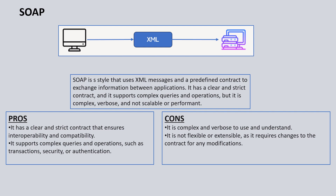The second pattern is SOAP. SOAP is known for using XML messages. The main attribute of SOAP is that it uses a very strict or predefined schema or contract with applications. Because of the strict schema, it can sometimes become very complex and verbose. The main takeaway from SOAP is that it uses an XML contract and defines a very clear-cut contract that ensures interoperability and compatibility between client and server. It also supports complex queries, and things like transaction, security, and authentication are built into SOAP. In terms of financial data, it is a good protocol to utilize.